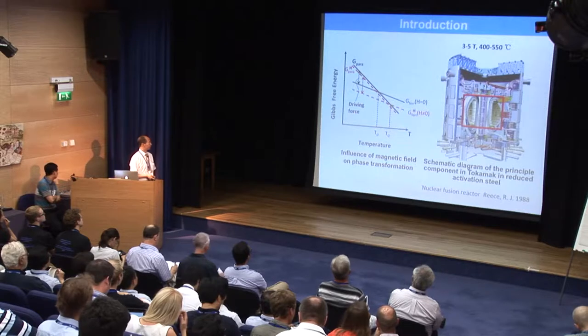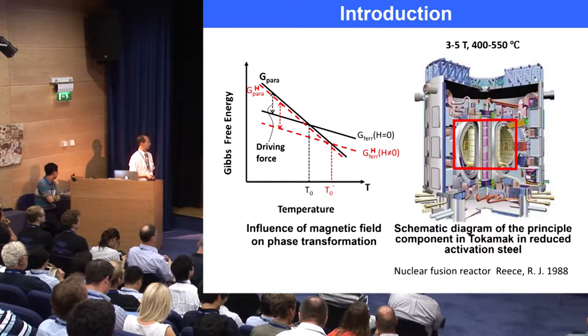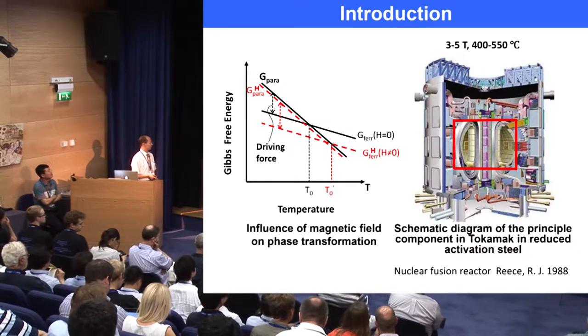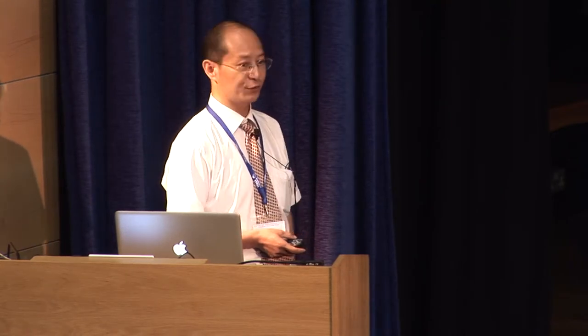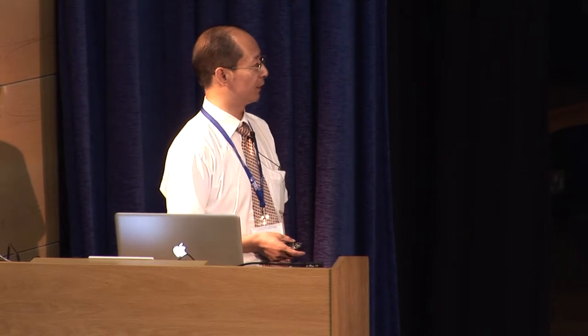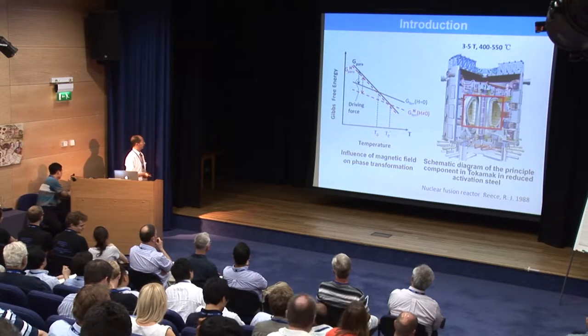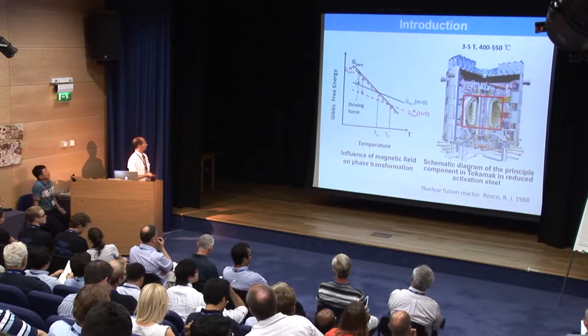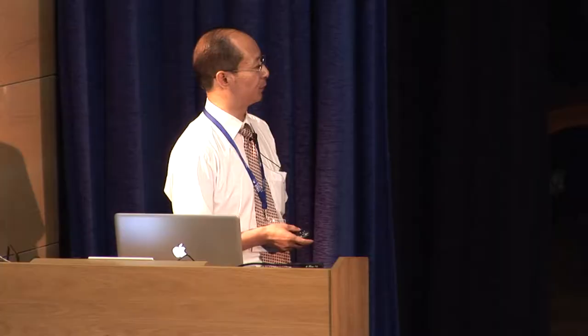As we know, like chemical composition and temperature, external magnetic field is an important factor to influence phase transformations. In recent years, many works have been done on the effect of high magnetic field on phase transformations, such as martensite transformation, bainite transformation, ferrite transformation, and pearlite transformation, because the magnetic field reduces free energy, increases driving force, and shifts the equilibrium to higher temperature.